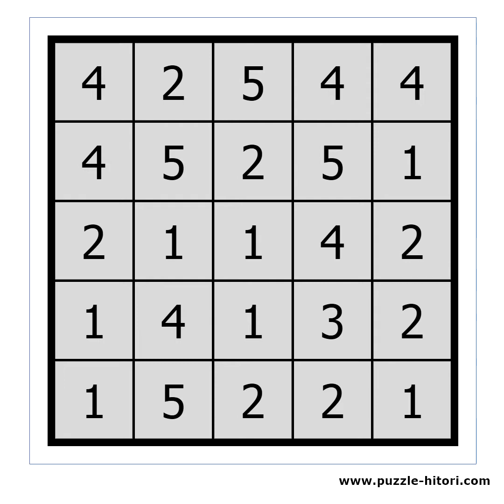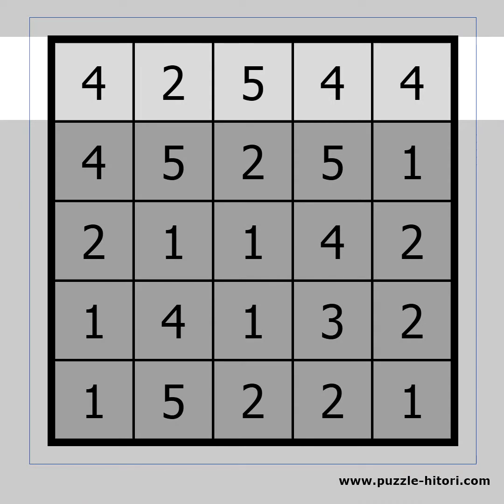An easy starting point is to look for three numbers on the same row or column and two of them are next to each other. For example, take a look at the fours on the first row.